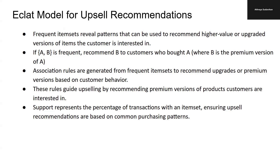Association rules are then generated from these item sets to suggest upgrades or premium alternatives based on what customers typically buy. These recommendations are driven by customer behavior, steering customers toward more expensive or upgraded product versions. The concept of support — measuring the frequency of an item set's appearance across transactions — ensures recommendations are based on widely observed purchasing patterns, making them reliable and relevant to a larger group of customers.